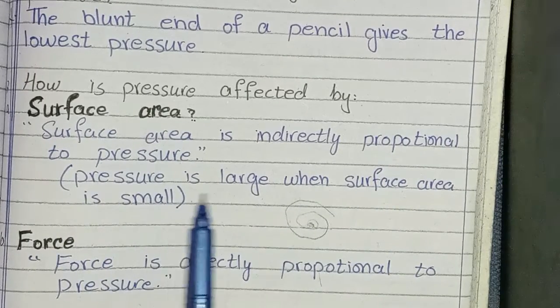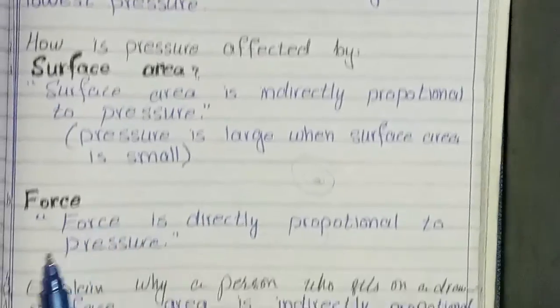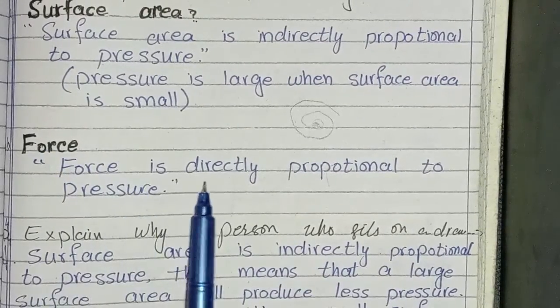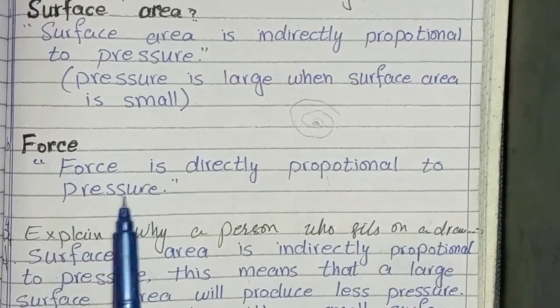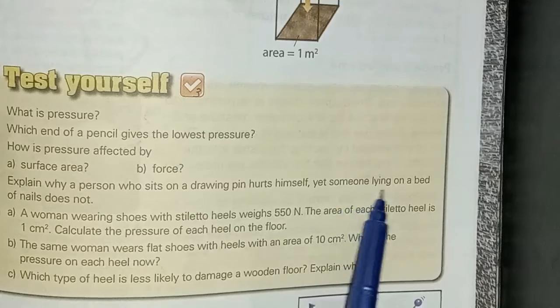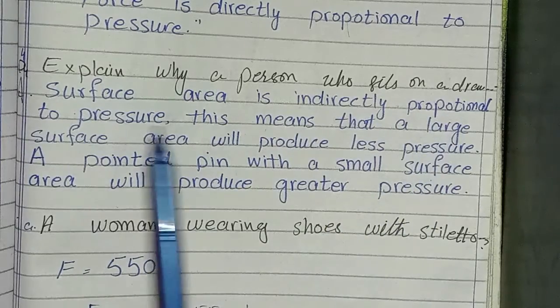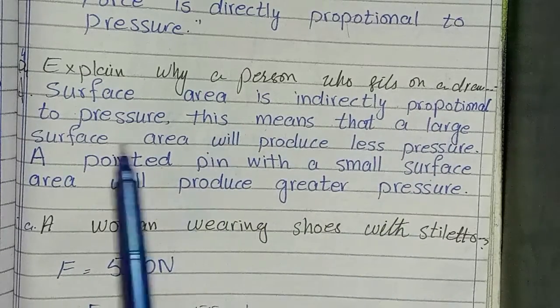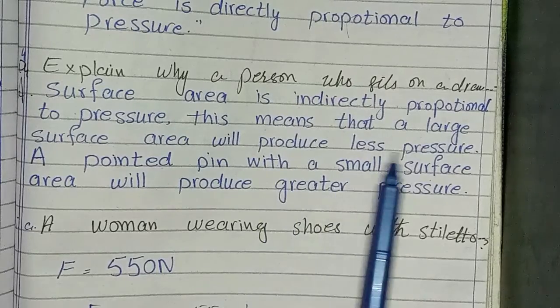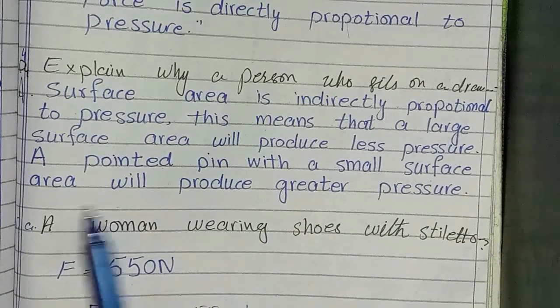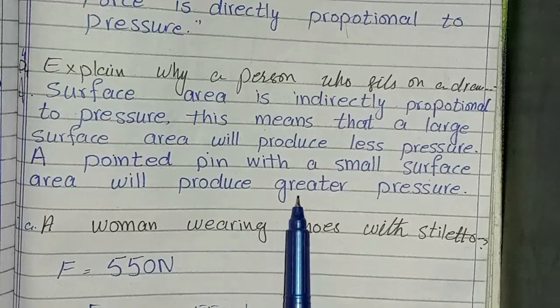How is pressure affected by surface area? Surface area is indirectly proportional to pressure — pressure is large when surface area is small. Force is directly proportional to pressure. Fourth question: Explain why a person who sits on a drawing pin hurts themselves, yet someone lying on a bed of nails does not. Surface area is indirectly proportional to pressure — a large surface area produces less pressure. A pointed pin with a small surface area produces greater pressure.